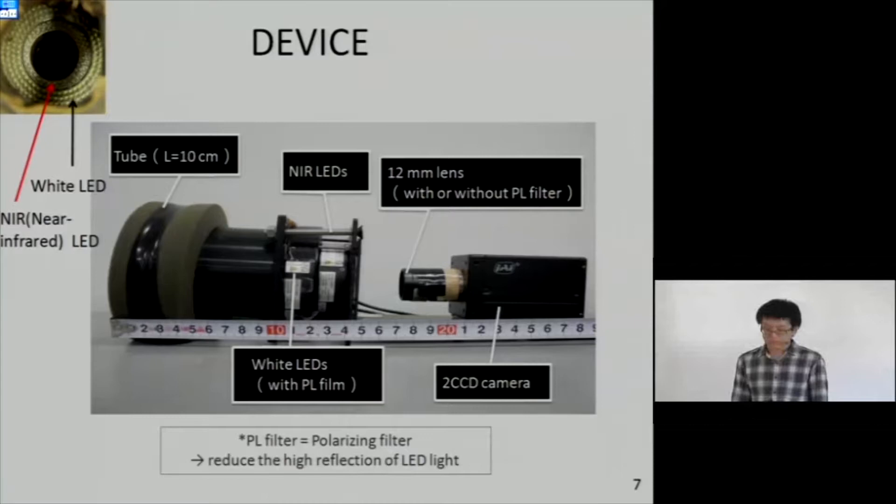The device we used is shown here. It is based on a 2CCD camera, which means it can take both color image and near-infrared image simultaneously. In the middle part, there are two kinds of light sources: near-infrared LED and white LED. From the front, you can see two ring-shaped LED lights connected with a plastic tube to reduce environment light. Because we want to see the tapetum color, we want to reduce specular reflection. So we added a polarizing filter in front of the camera lens and also in front of the white LED light.